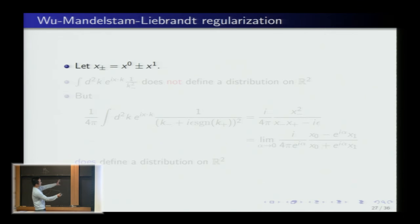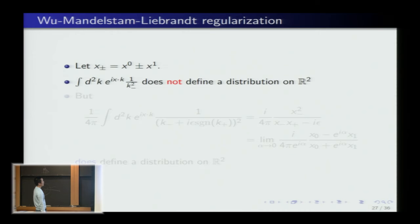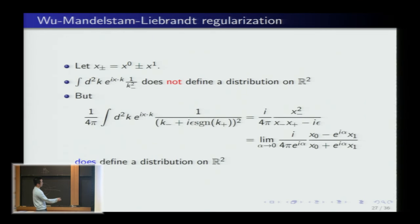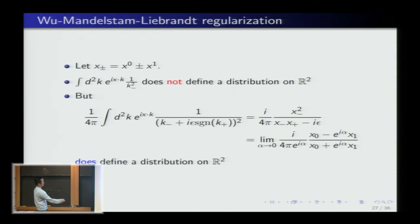To match the literature's notation, go to light-cone coordinates: x₊ = x₀ + x₁, x₋ = x₀ − x₁. Axial gauge with respect to these variables is singular because 1/k² doesn't define a distribution in two dimensions. Using an appropriate i-ε prescription gives a well-defined distribution — the right prescription that allows one to Wick-rotate, moving one pole down and one up. So the propagator is regularized this way. Everything remains Euclidean; I'm just changing coordinates.